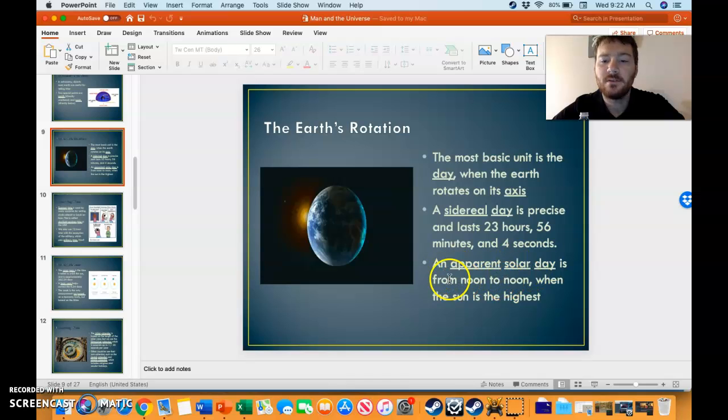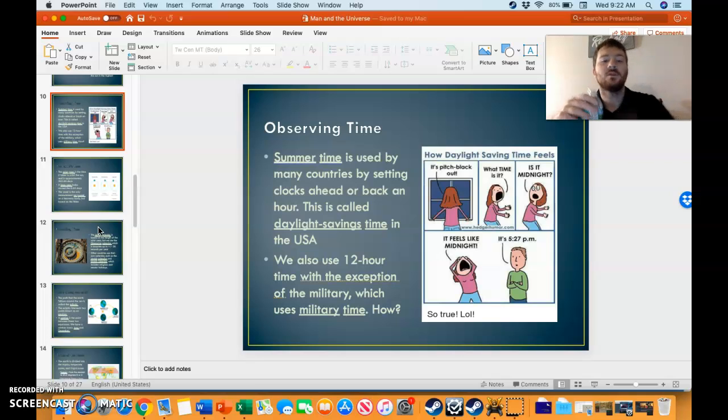The apparent solar day is from noon to noon when the sun's the highest. Summertime, also known as daylight savings time, is when you set your clocks ahead or back to help correct when the sun rises or sets. And that happened recently. What time is it? It feels like midnight, it's five o'clock, so it can kind of throw you off for a little bit.